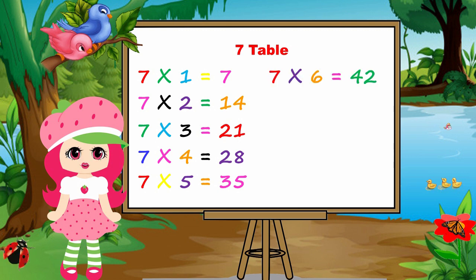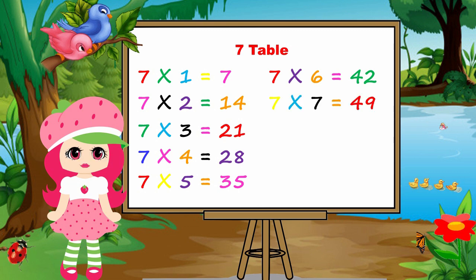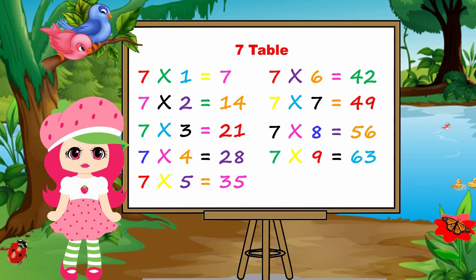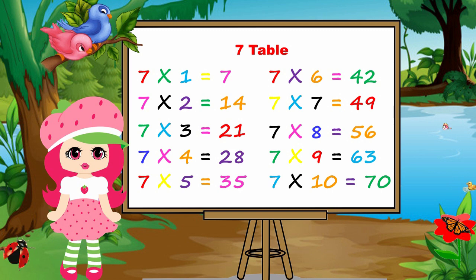Seven sixes are forty-two. Seven sevens are forty-nine. Seven eights are fifty-six. Seven nines are sixty-three. Seven tens are seventy.